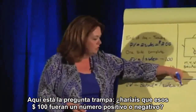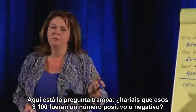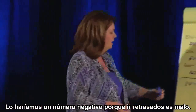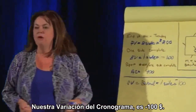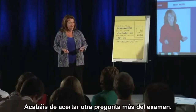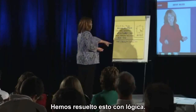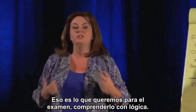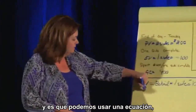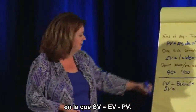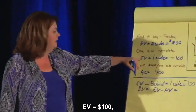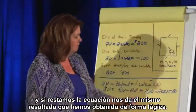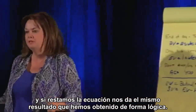Being behind schedule is bad, so we make it a negative number. Our schedule variance is negative one hundred dollars. The fallback equation is: SV = EV minus PV. EV is one hundred dollars, PV is two hundred dollars, so one hundred minus two hundred gives us negative one hundred — the same answer we got logically.